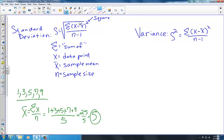Now, we'll plug everything into our formula for standard deviation and solve. So S equals the square root of 1 minus 5 squared plus 3 minus 5 squared plus 5 minus 5 squared plus 7 minus 5 squared plus 9 minus 5 squared.